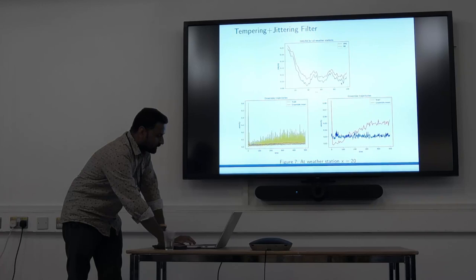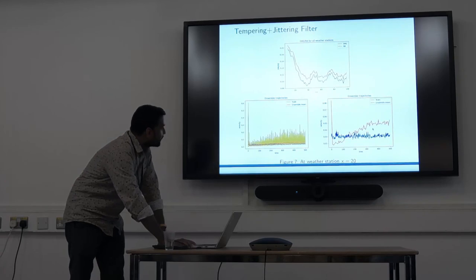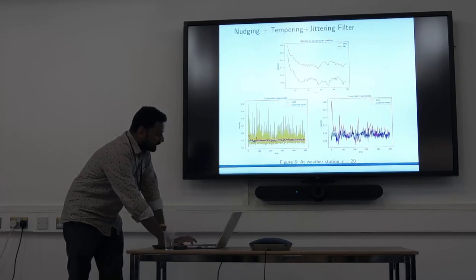When we're using tempering plus jittering, we can see that errors and relative biases are coming better and it's tracking well, but not as we expected.